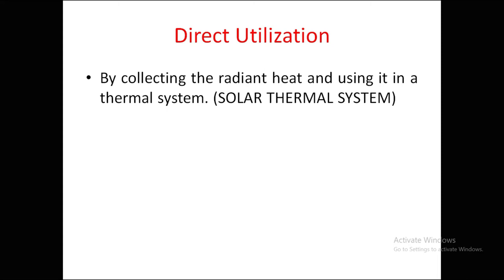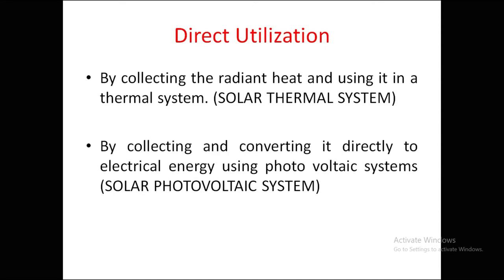Solar energy can be utilized directly in two ways. The first is collecting the radiant heat and using it in a thermal system — for example, solar water heaters and other heating applications where temperature rise is required. These are called solar thermal systems. The second way is collecting and converting solar energy directly into electrical energy using a photovoltaic system, known as the solar photovoltaic system.